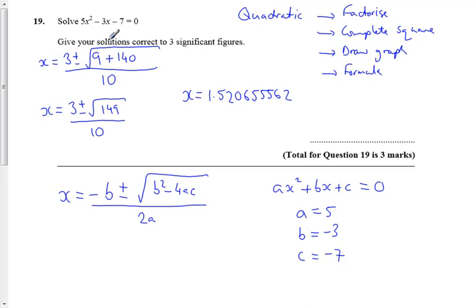Another hint we've got is give our solutions, it means we're more than one, to three significant figures. Let's do the other, the negative. 3 minus the square root of 149, and then divide it by 10. And I get the answer minus 0.920655562.